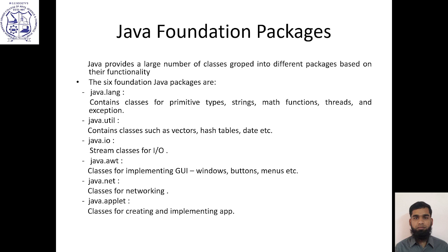java.lang contains classes for primitive types, strings, math functions, threads, and exceptions. java.util contains vectors, hash tables, date, etc. The java.io package contains stream classes for all input operations, like InputStream, BufferedReader, and StreamReader. java.awt, the Abstract Window Toolkit, contains all the windows-related, button-related, and menu-related classes.